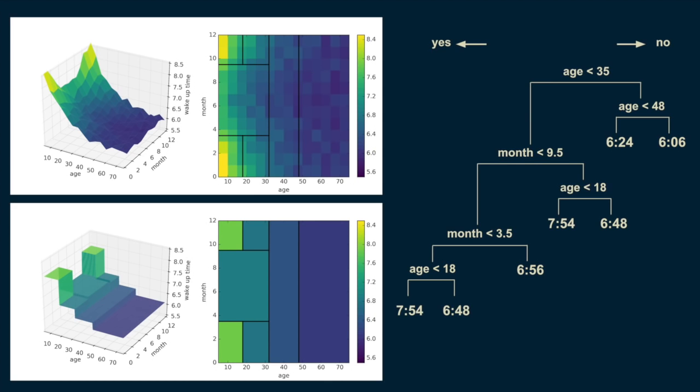The next cut continues this trend, focusing on dividing those younger than 35 in summer months to those older and younger than 13. The shape of the model becomes even more similar to that of the data. You can imagine continuing this process until the model closely represents the smooth trend underlying the data. Each decision region would become progressively smaller. The approximation to the underlying function in the data would become progressively better.